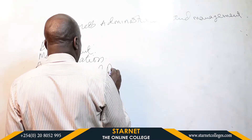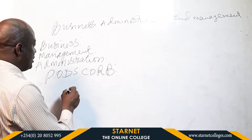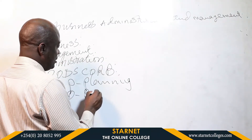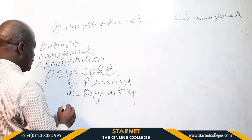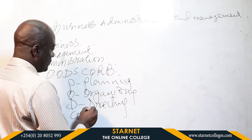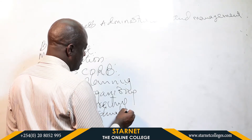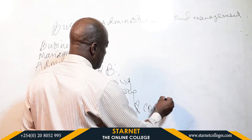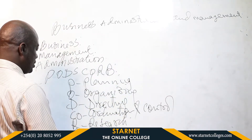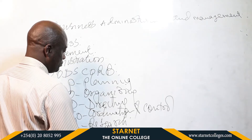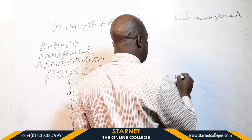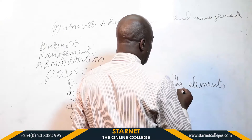Management is always denoted by an acronym called PODSCORB. P stands for planning, O stands for organizing, D stands for directing, CO stands for coordination and control, R stands for research, and B stands for budgeting. All of these constitute the elements of management.